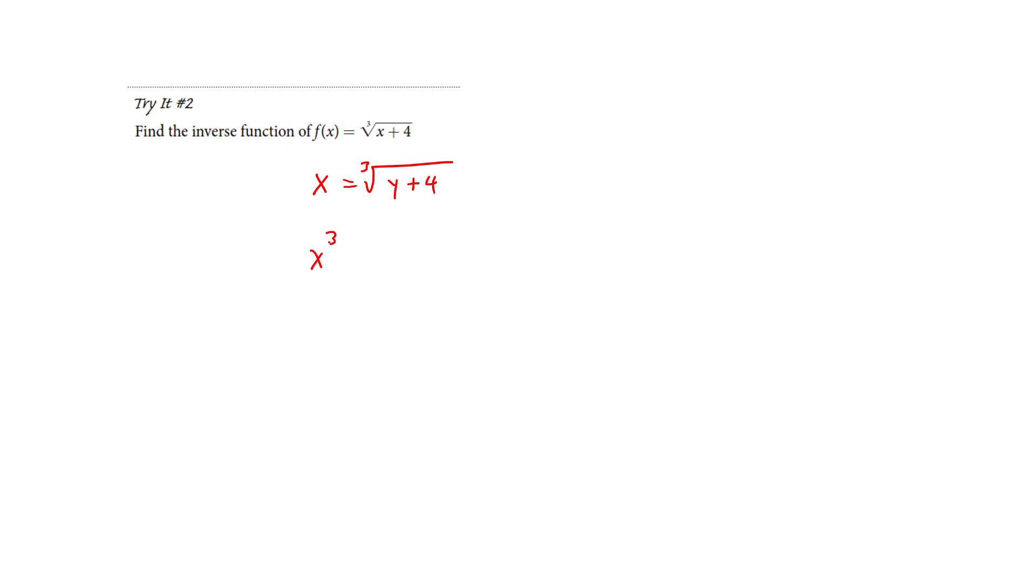So, if I cube this side, I get x to the third, and if I cube this side, they're opposites. I'll only be left with y plus 4. Now, I'm going to subtract 4, and I get this.